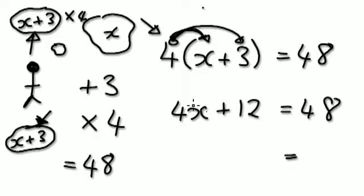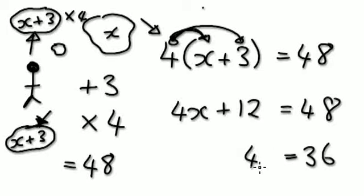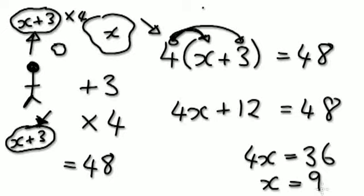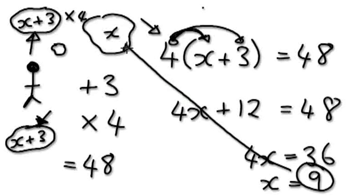Now it's just a matter of solving x. Take away 12 from each side — so this would be 36. This would be 4x equals 36. Now divide both sides by 4. So x equals 36 divided by 4, which is 9. So x is 9.